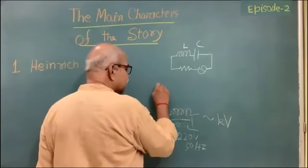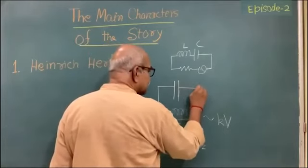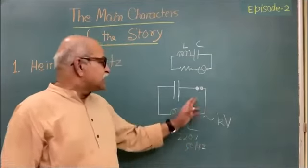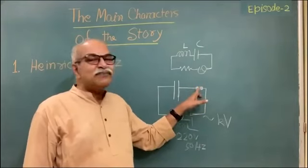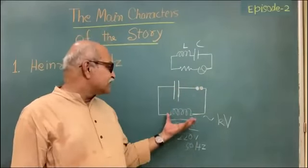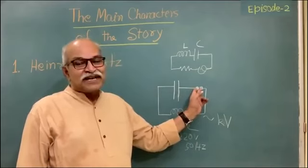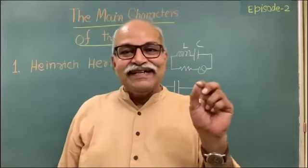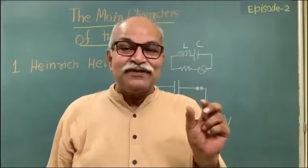Then we have a capacitor here, and the circuit is not complete — that's the basic part. There is a gap in the circuit, and here we have very small spheres separated by a small distance, so the circuit is broken. Since the high voltage is there and the capacitor is there, there will be a high voltage across this gap. If you have high voltage across a gap where air is present, that air can get ionized because of the high voltage — a high voltage across a small gap means a large electric field.